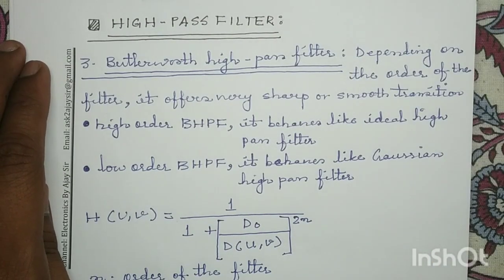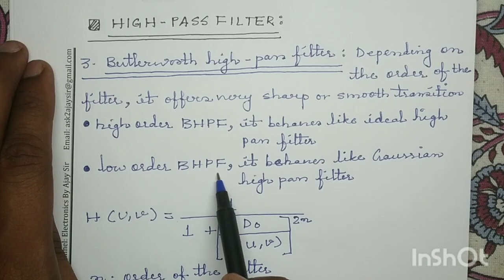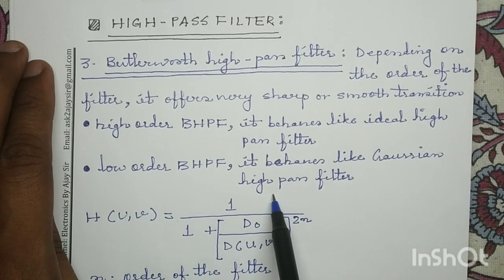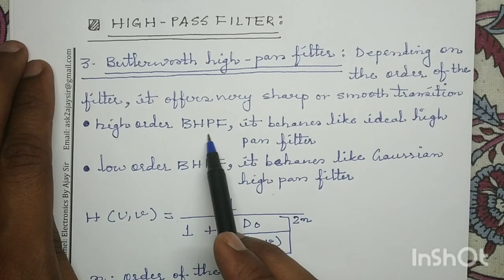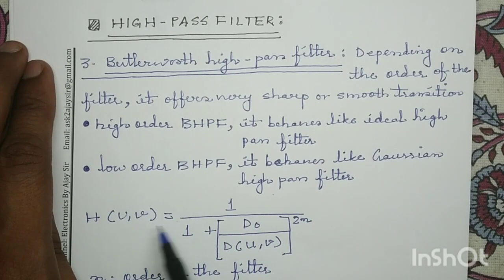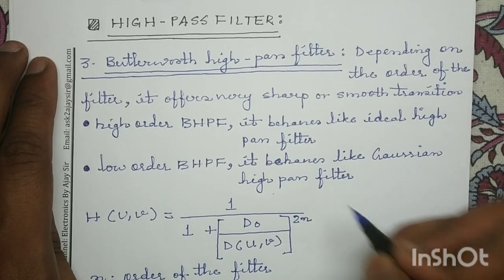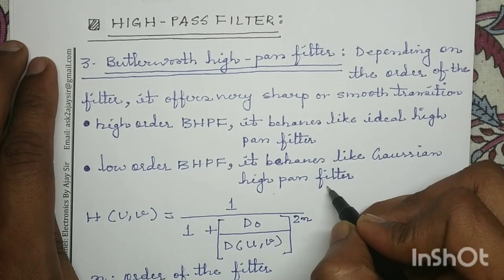The Butterworth high pass filter's performance varies between the ideal high pass filter and the Gaussian high pass filter. For a low-order Butterworth high pass filter it behaves like a Gaussian high pass filter, whereas for a high-order Butterworth high pass filter it behaves like an ideal high pass filter. The transfer function is H(u,v) = 1 / (1 + (D₀/D(u,v))^(2N)).